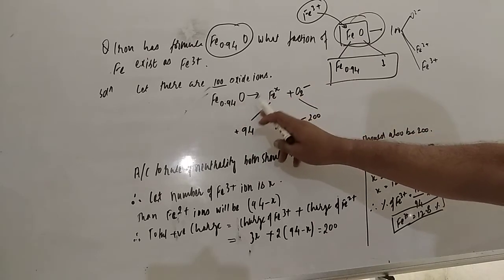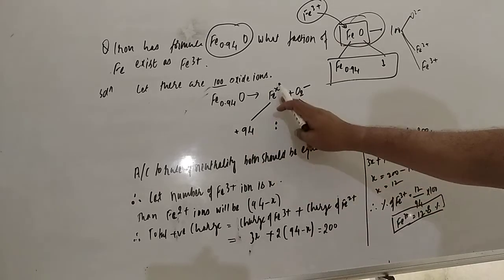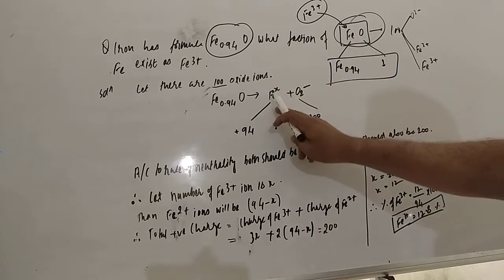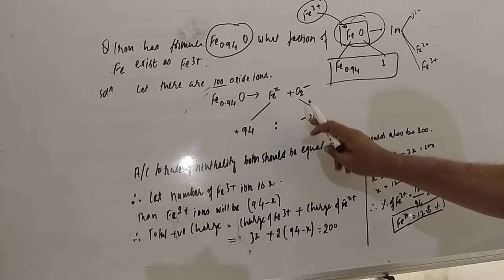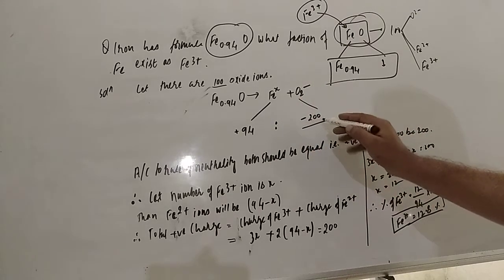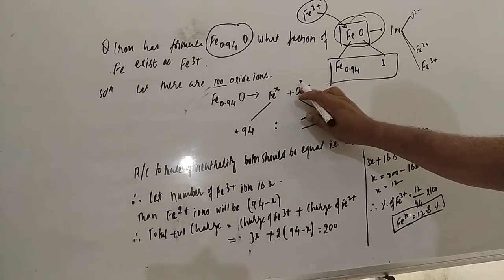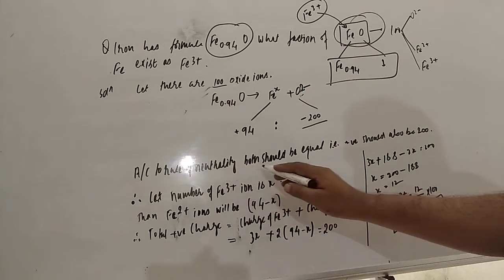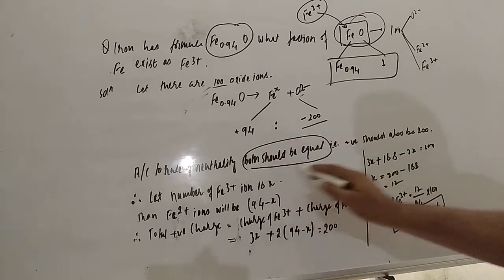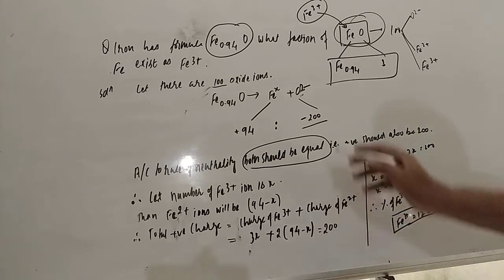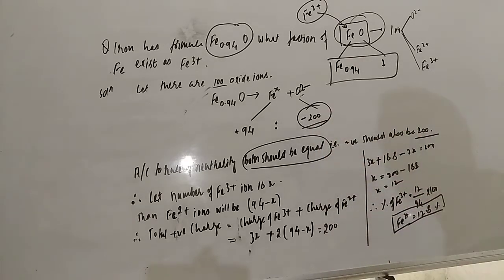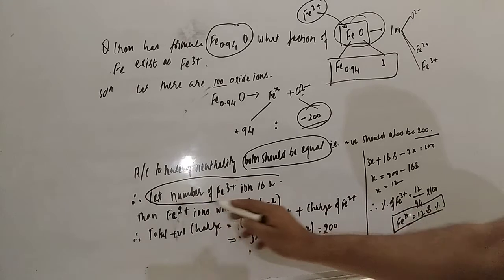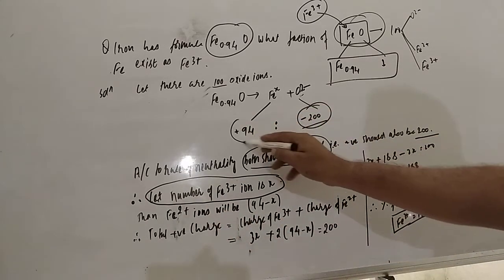In the formula Fe₀.₉₄O, Fe is giving 94 ions total. Since both Fe³⁺ and Fe²⁺ are present, we consider the total as 94. O²⁻ gives 100 ions with a 2 negative charge each, so that is 200 negative charges total. According to the rule of electrical neutrality, positive charge must also equal 200. Let the number of Fe³⁺ ions be X.